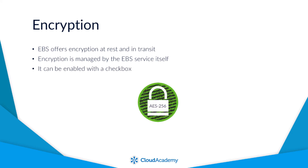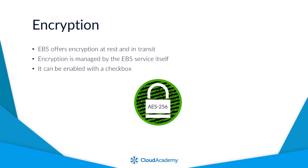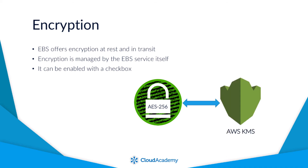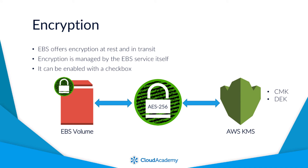The encryption process uses the AES-256 encryption algorithm and interacts with another AWS service, the Key Management Service known as KMS. KMS uses Customer Master Keys (CMKs) to create Data Encryption Keys (DEKs), enabling the encryption of data across a range of AWS services such as EBS. Any snapshot taken from an encrypted volume will also be encrypted, and any volume created from that encrypted snapshot will also be encrypted.